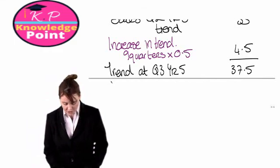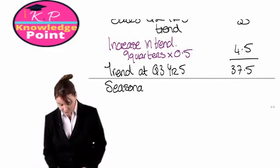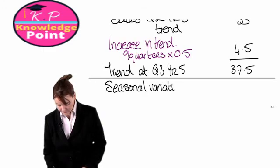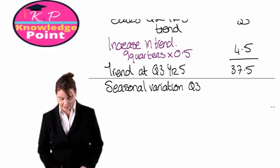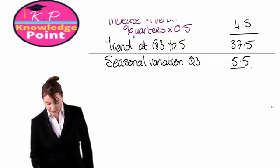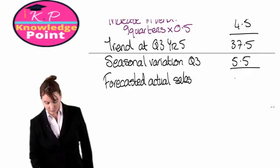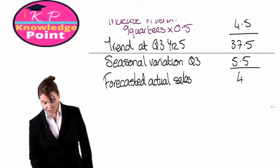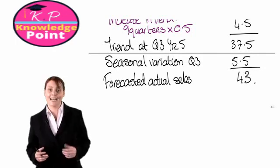Our final step is to adjust for our seasonal variation. Looking at our table, the seasonal variation for Q3 is that sales will be 5.5 units above the trend. So if the trend is 37.5, our forecasted actual sales will be 43. And that's how we use time series analysis to forecast sales in the future using the additive model.